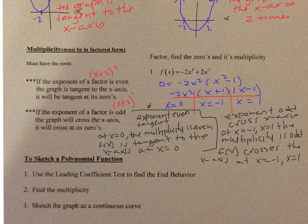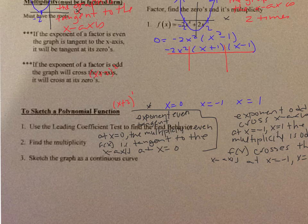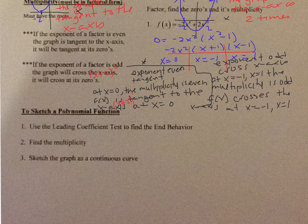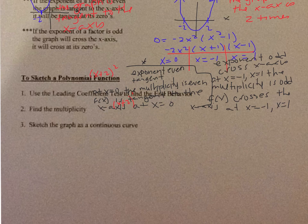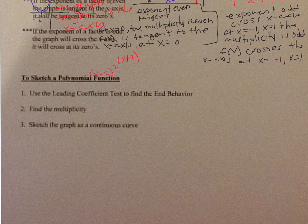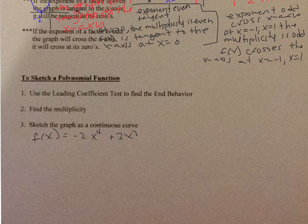Let's graph f(x) = -2x⁴ + 2x² without a calculator. First, do the leading coefficient test to find the end behavior. The degree is 4, which is even — so the graph goes either up-up or down-down. The leading coefficient is negative 2, which is negative, so the graph goes down-down. That's the first thing we need to know. Next, we need the multiplicity.